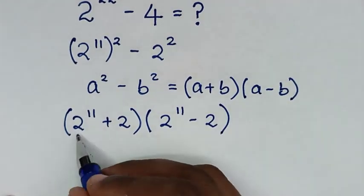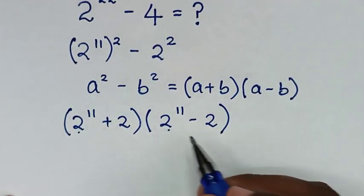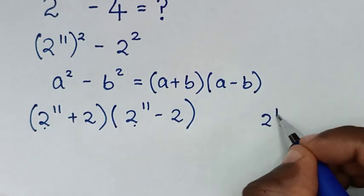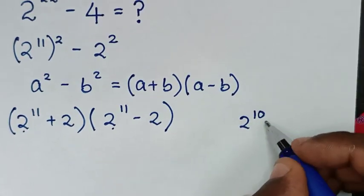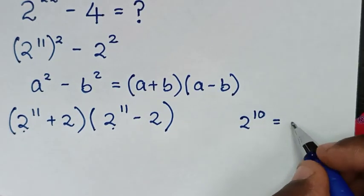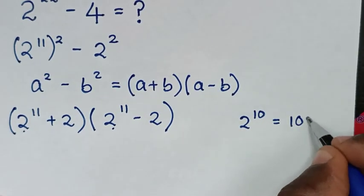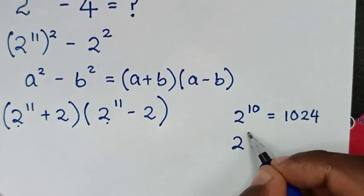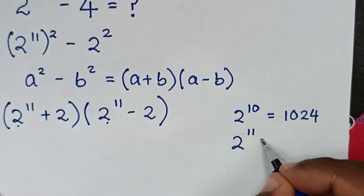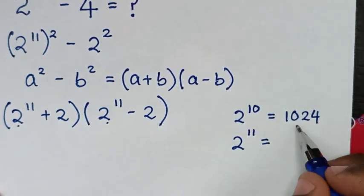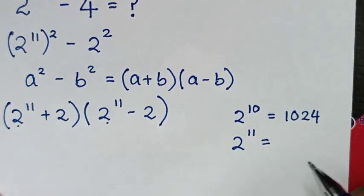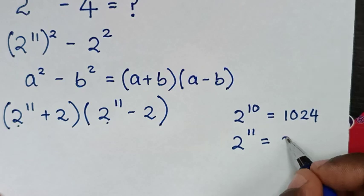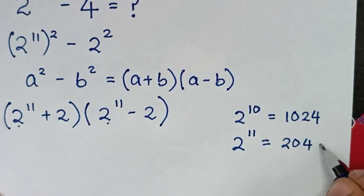Now from this, 2 power of 11: if we know that 2 power of 10 is equal to 1024, then 2 power of 11 is equal to 1024 times 2, so that is 2048.